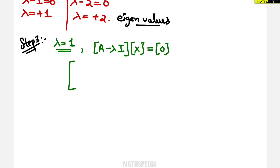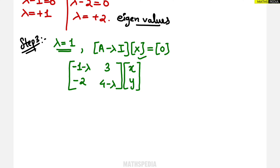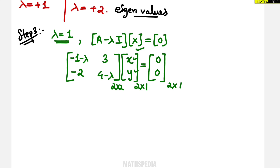For lambda equals 1, the matrix A minus lambda I becomes: the diagonal elements change — minus 1 minus 1 is minus 2, and 4 minus 1 is 3 — while off-diagonal terms stay as 3 and minus 2. So the matrix is [-2, 3; -2, 3], multiplied by column vector [x; y] equals [0; 0].